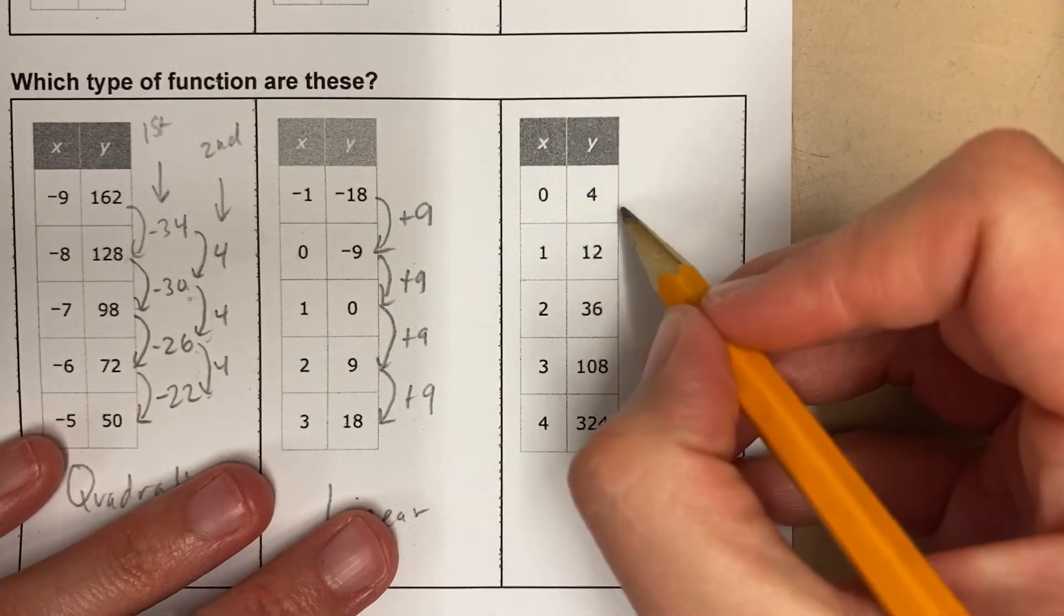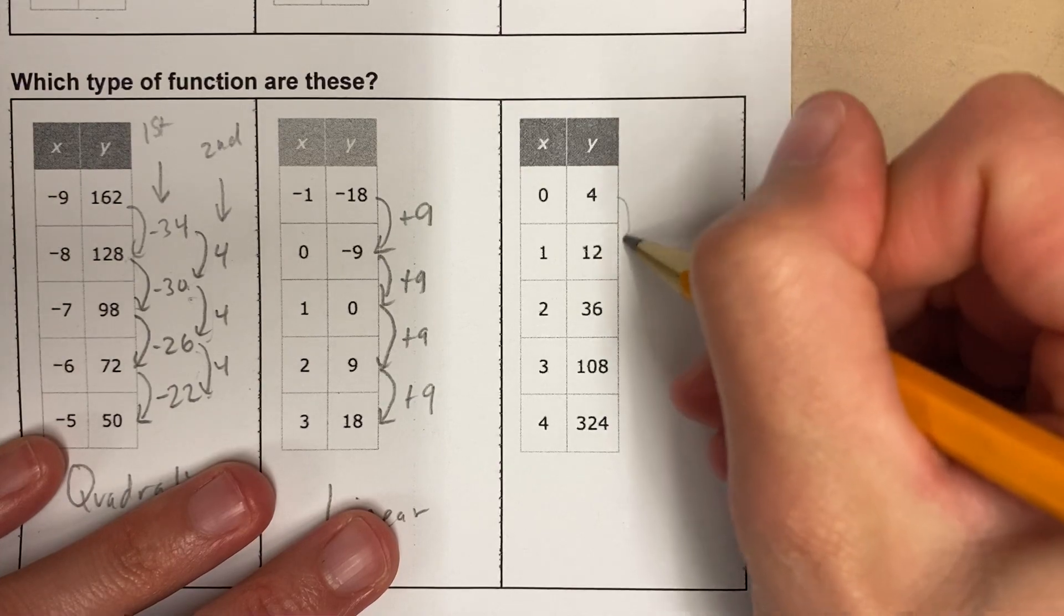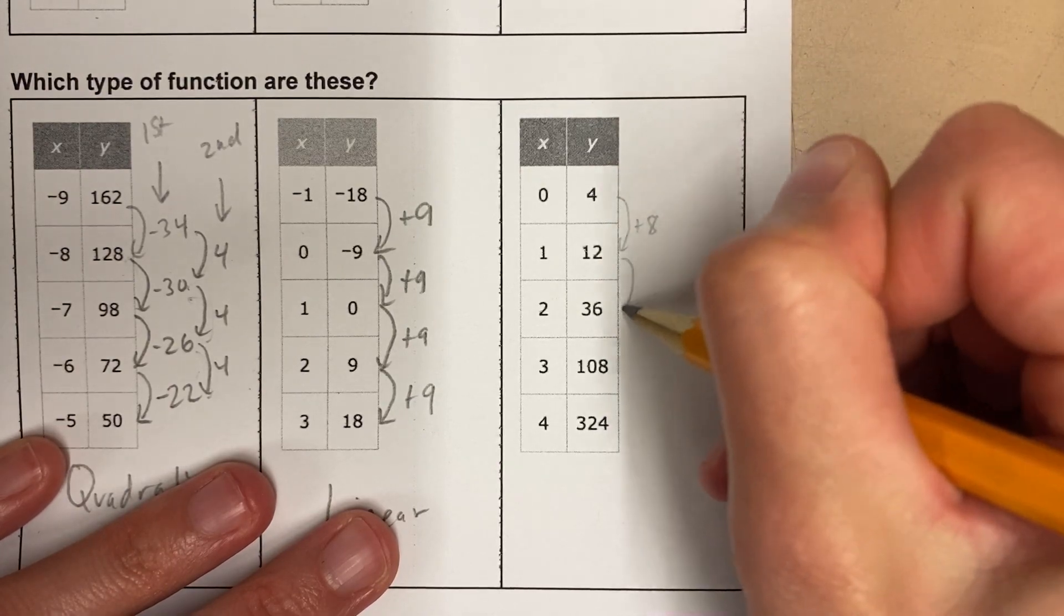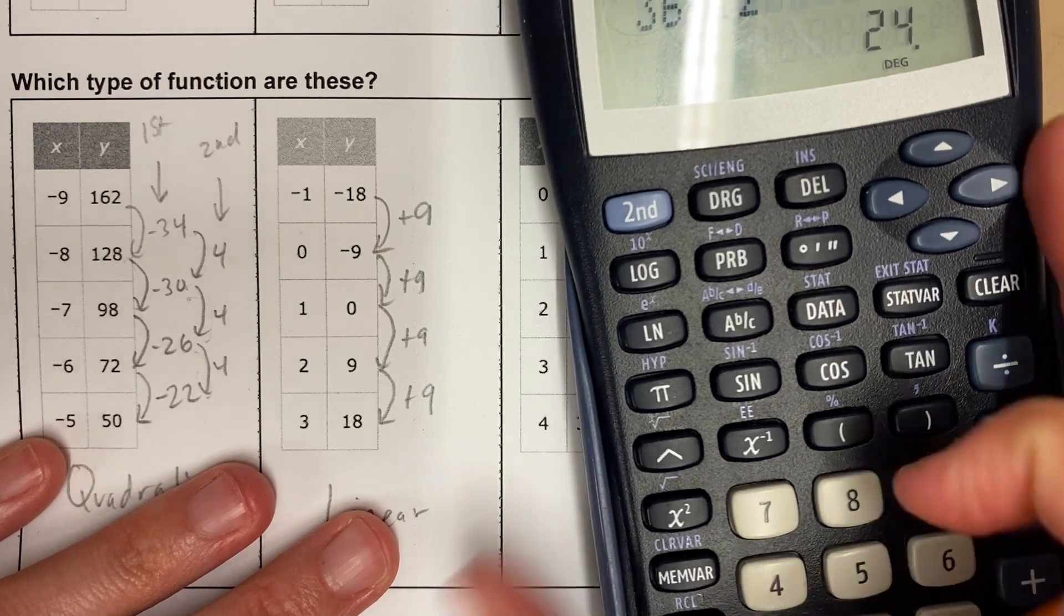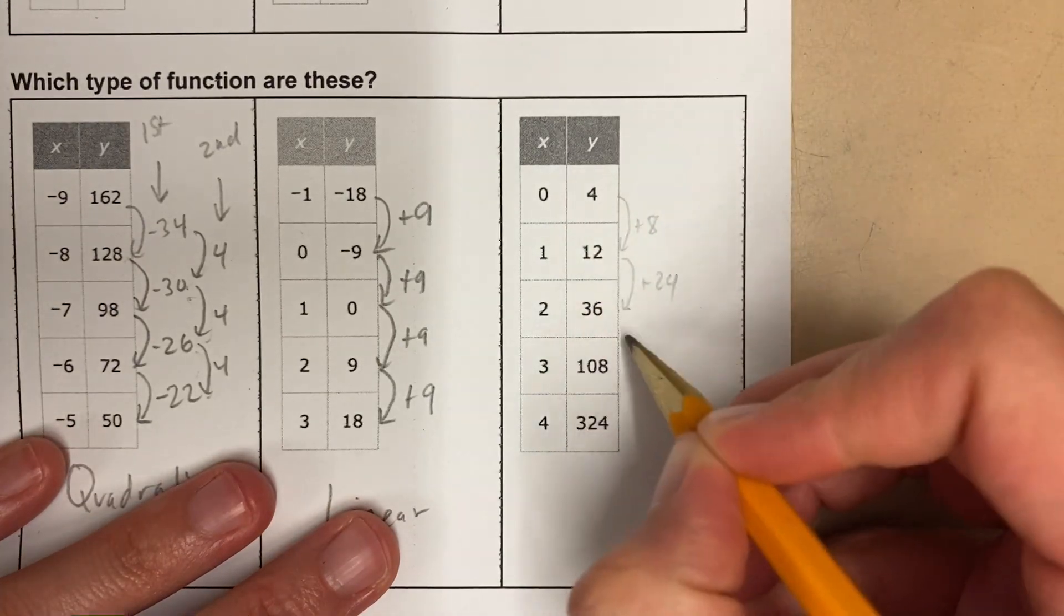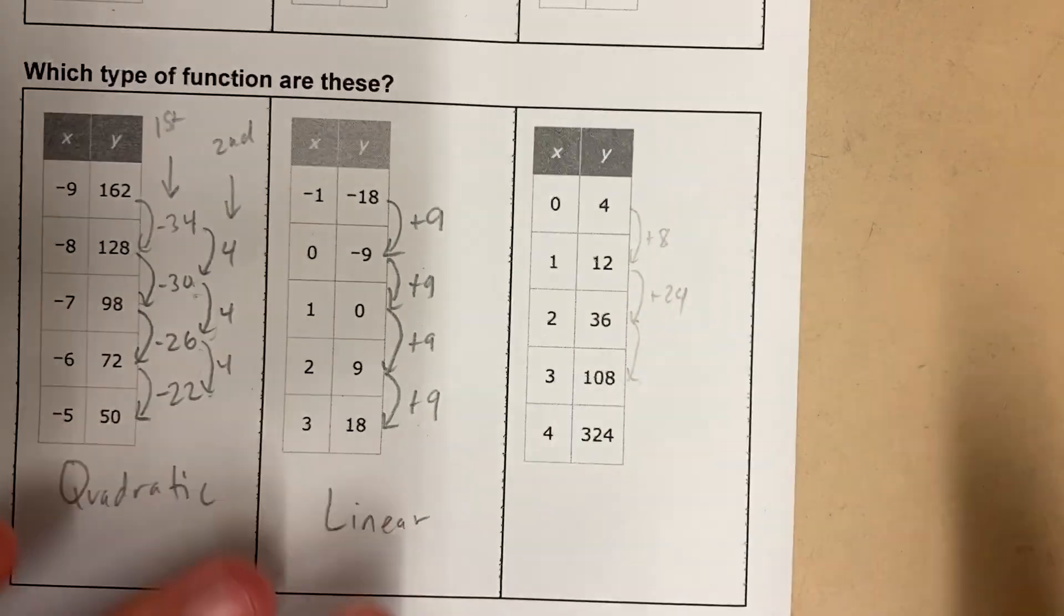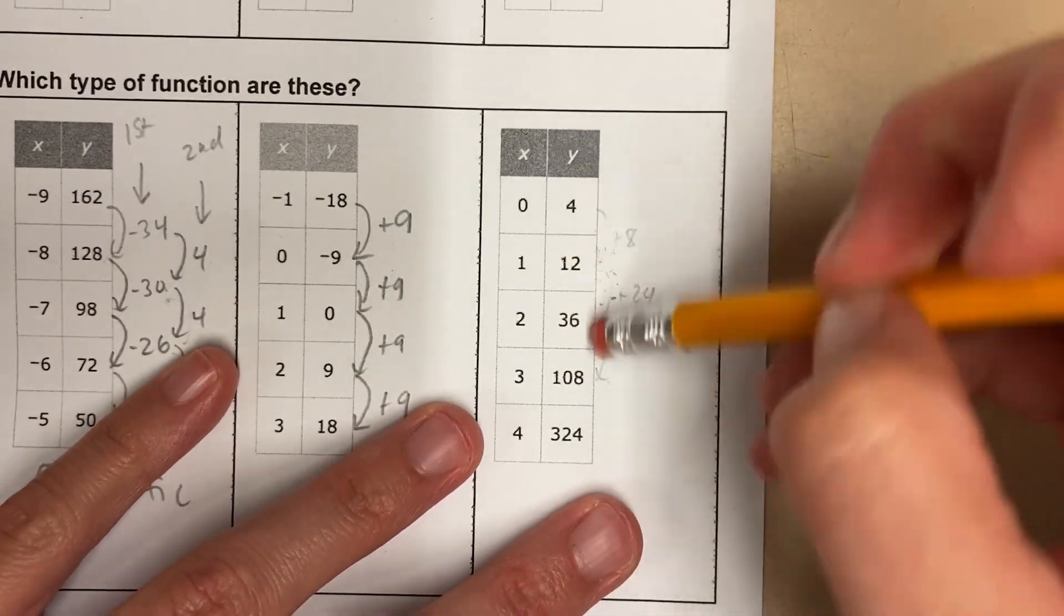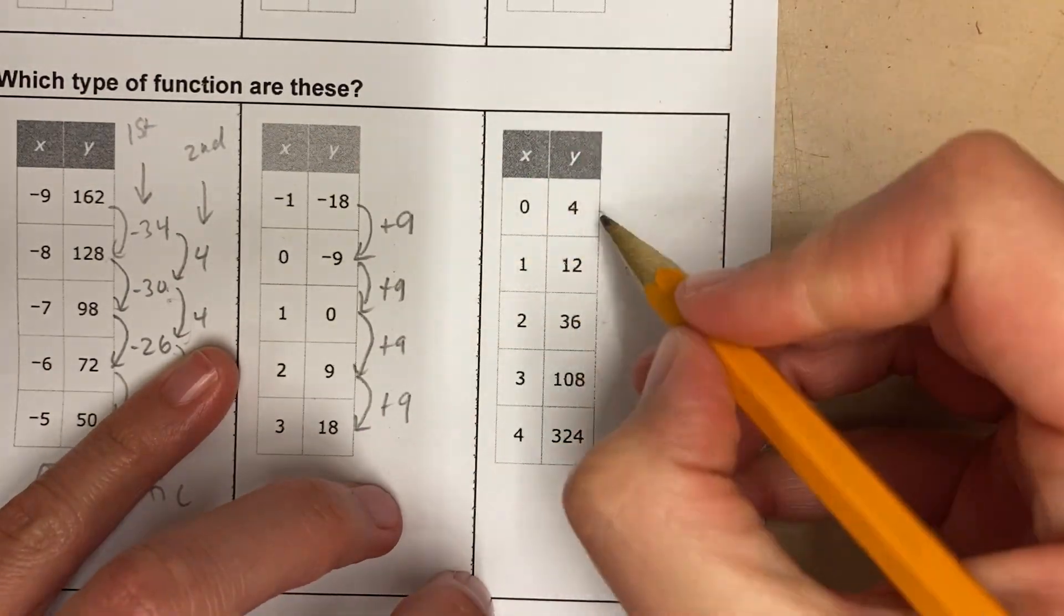Let's take a look at exponential. Maybe you can use process of elimination, but here, this would be plus 8. This would be 36 minus 12, plus 24. This would be plus a really big number. I'm suspicious. I don't think this is going to be linear or quadratic. Let's take a look and see if we can multiply.